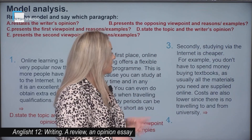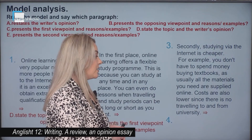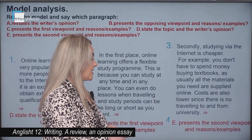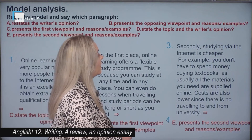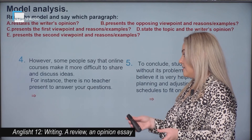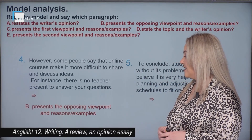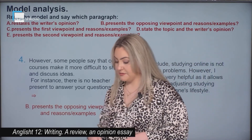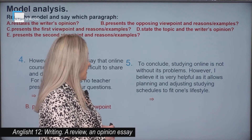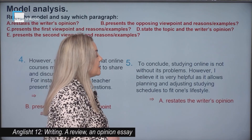The third paragraph: 'Secondly, studying via the internet is cheaper. For example, you don't have to spend money buying textbooks, as usually all the materials you need are supplied online. Costs are also lower since there is no traveling to and from university.' This paragraph presents the second viewpoint and reasons or examples. The fourth paragraph: 'However, some people say that online courses make it more difficult to share and discuss ideas. For instance, there is no teacher present to answer your questions.' This paragraph presents the opposing viewpoint and reasons or examples. The final paragraph: 'To conclude, studying online is not without its problems. However, I believe it is very helpful as it allows planning and adjusting studying schedules to fit one's lifestyle.' This paragraph restates the writer's opinion.